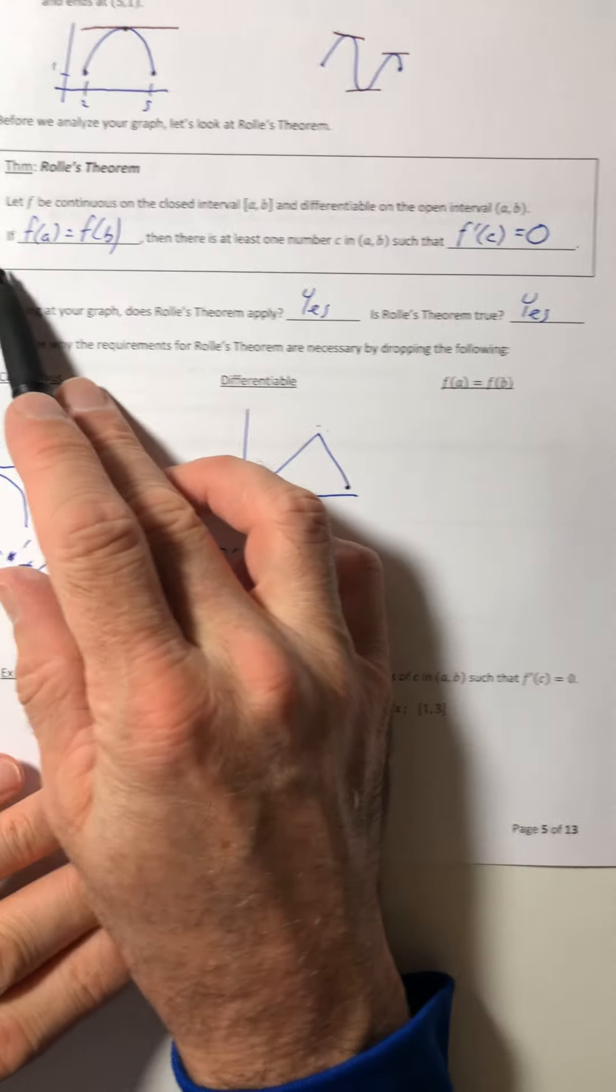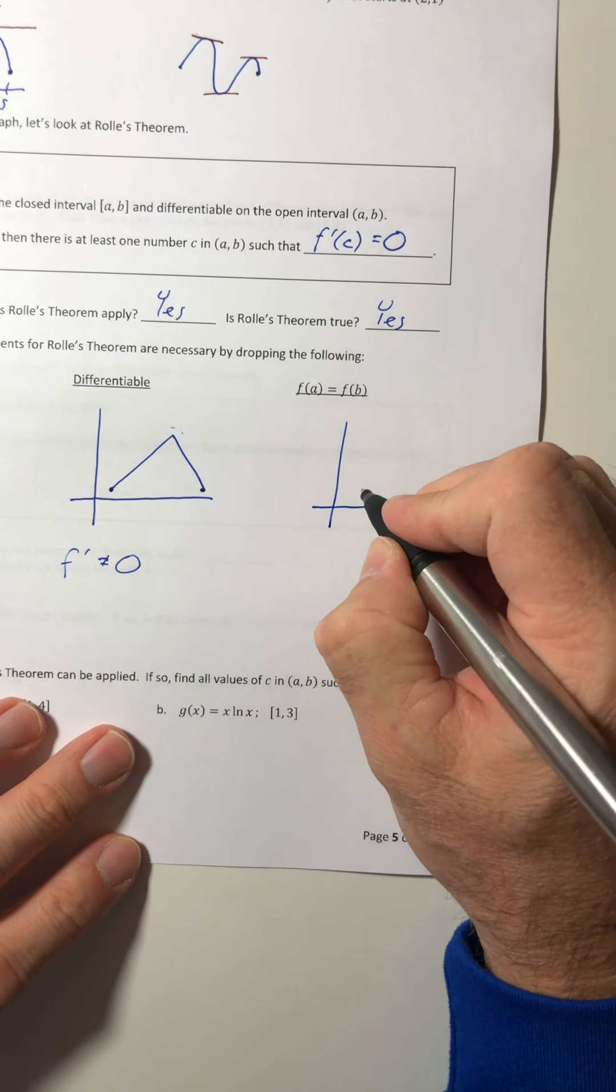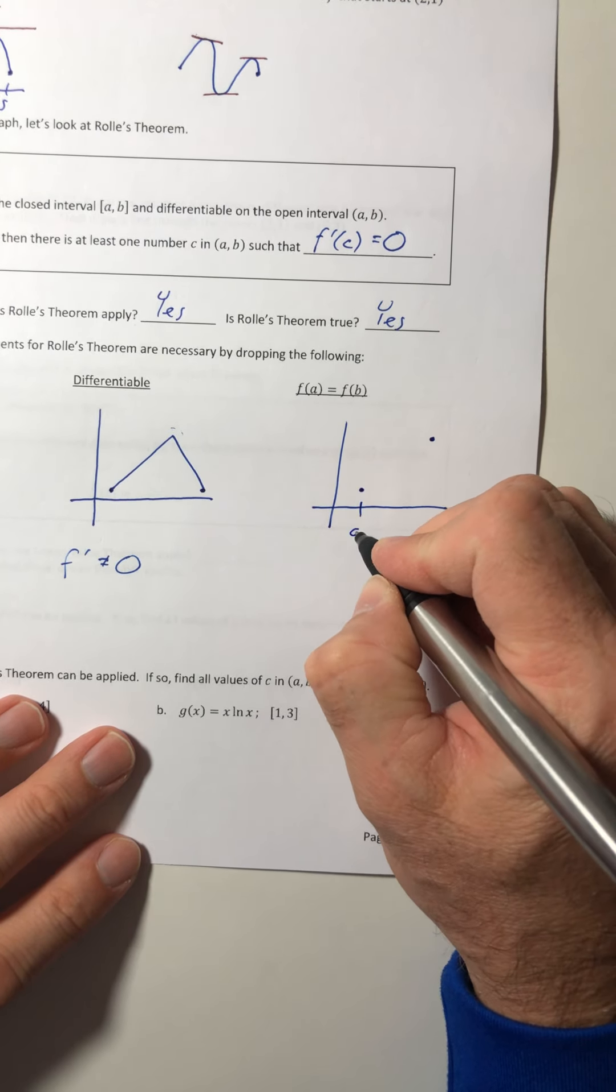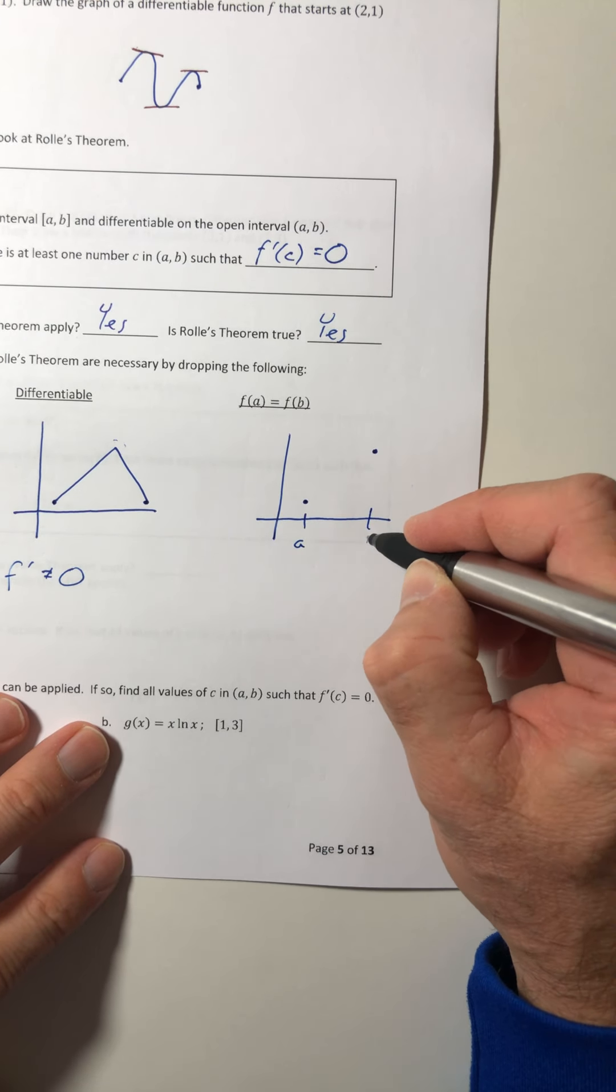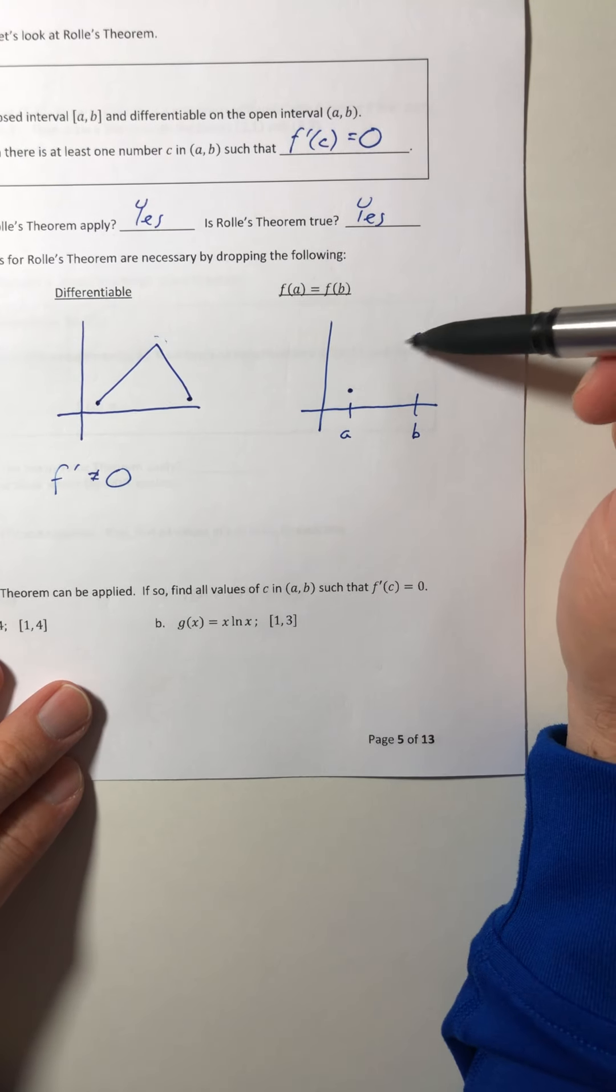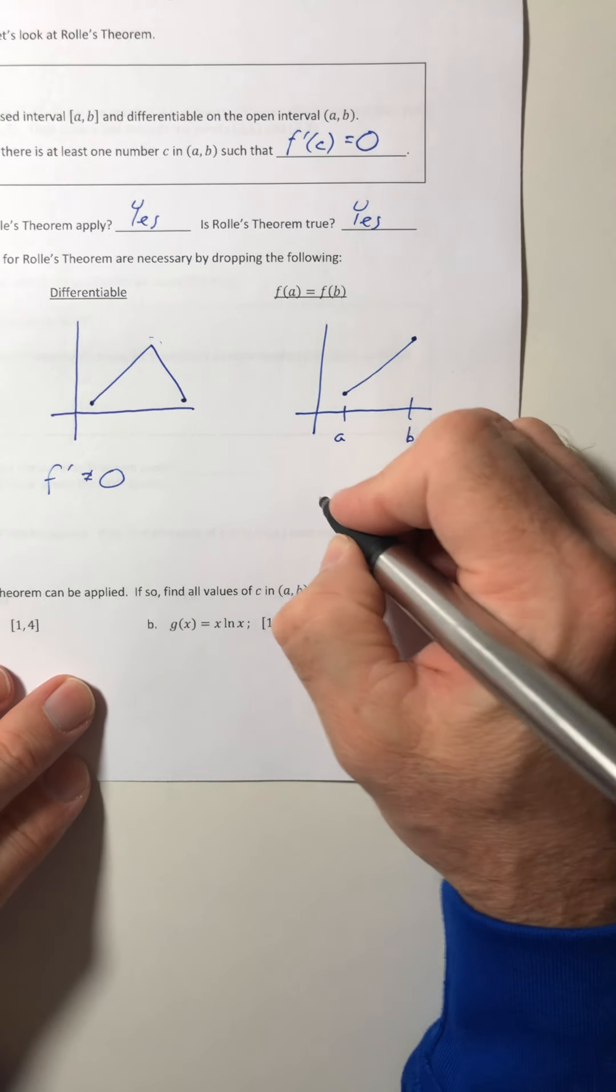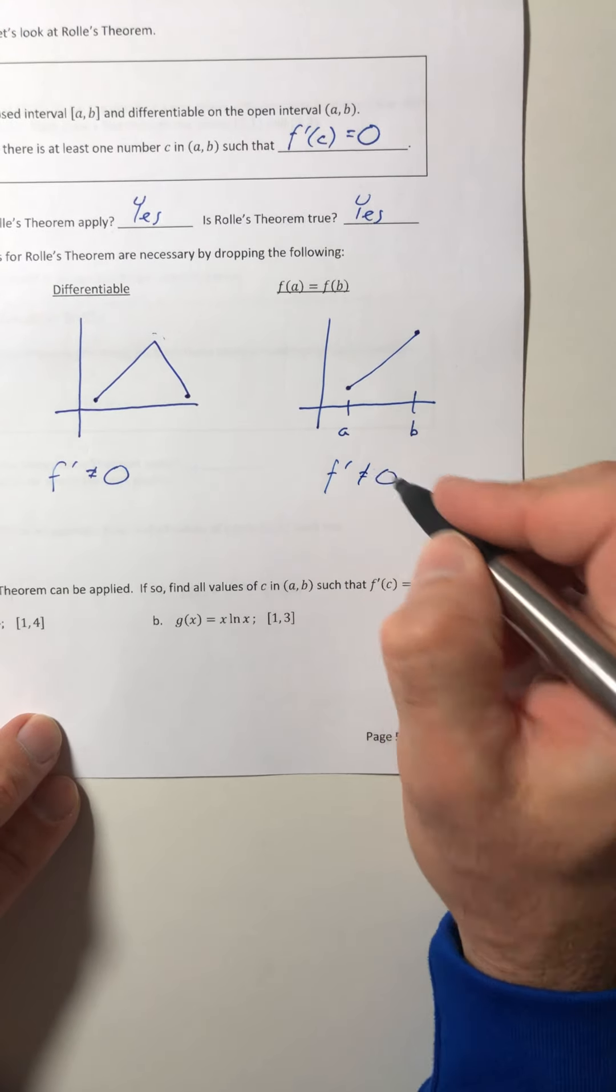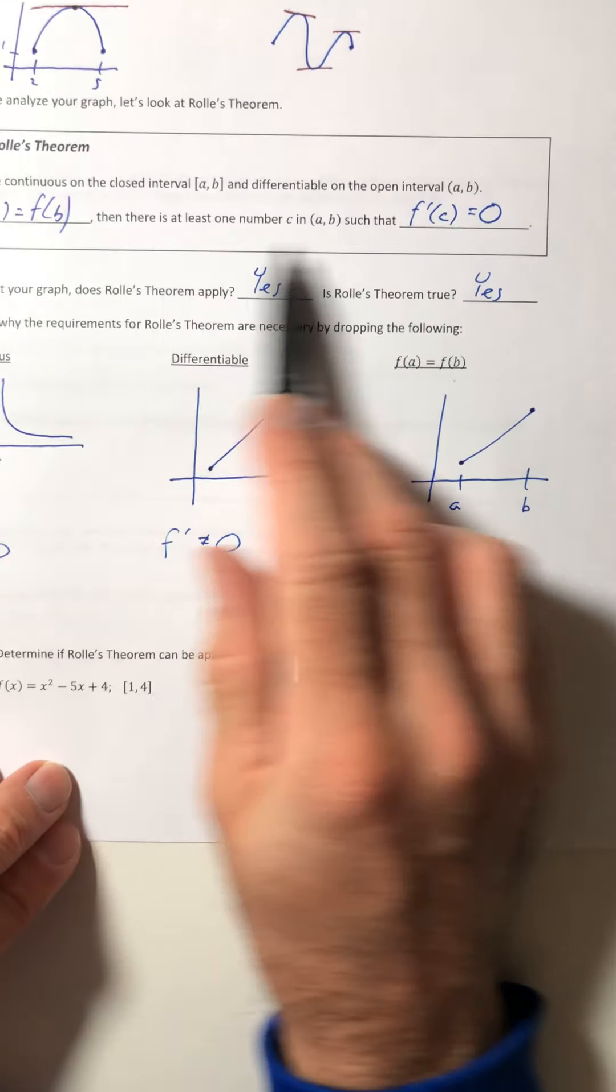And then if we dropped out that f(a) has to equal f(b). Don't know if you just heard that, but the dog just jumped up on the couch and was not graceful about it. Okay, so let's say it had differing Y values. Well, what if you connected it with a line? There's still no location where the derivative is equal to zero. So the conditions are necessary for the Rolle's theorem to actually hold.